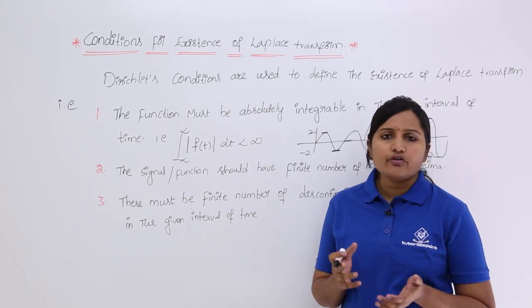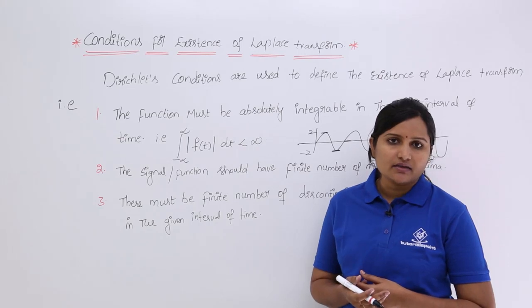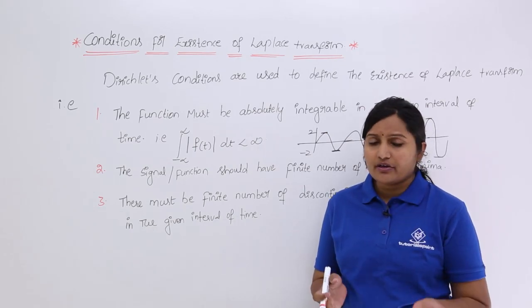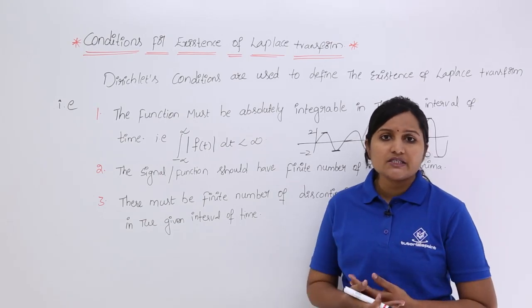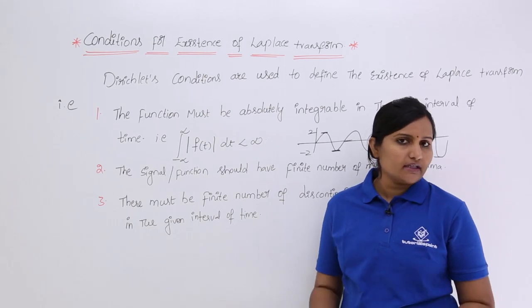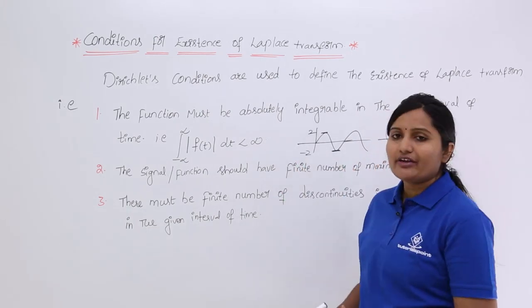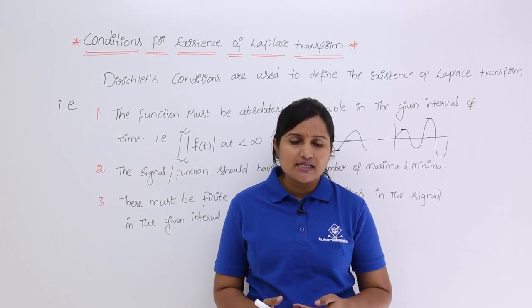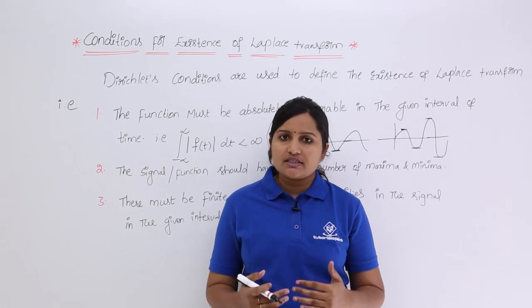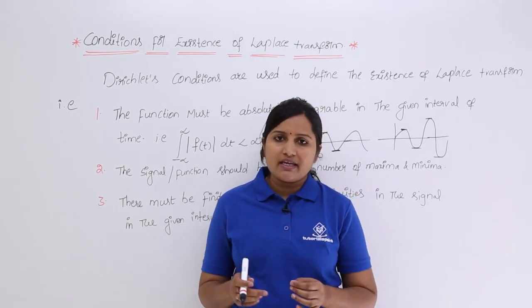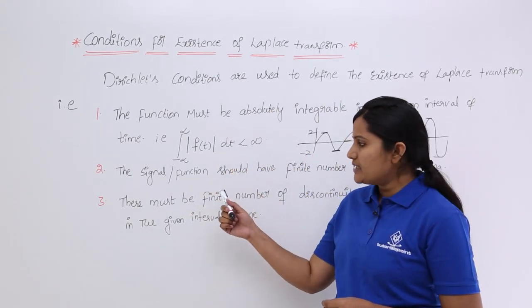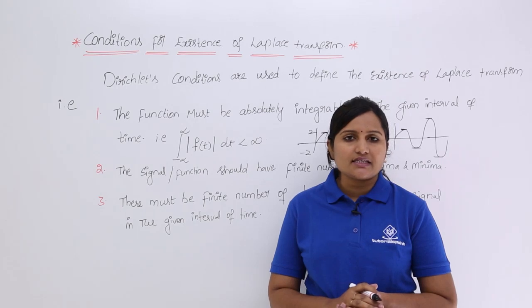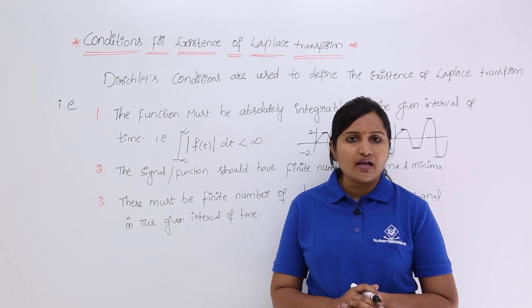If your signal has a finite number of discontinuities, there won't be much loss and you can trace the Laplace transform — that means you can trace the spectrum of the signal. To summarize, we have three Dirichlet conditions for the existence of Laplace transform, the same as those used for Fourier transform: the signal must be absolutely integrable, it must have a finite number of discontinuities, and it must have a finite number of maxima and minima. These are the conditions for existence of Laplace transform, also called Dirichlet conditions.